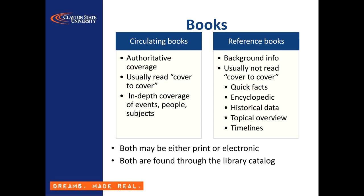Libraries often categorize books as circulating or reference. This mostly has to do with how the books are meant to be used. Circulating books are largely intended to be read in depth from start to finish or some significant portion thereof. As you read you build up a narrative — it could be a literary narrative or a scholarly or historical narrative — a comprehensive picture that builds up as you go along.